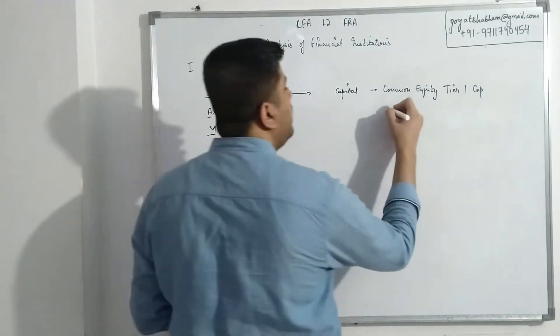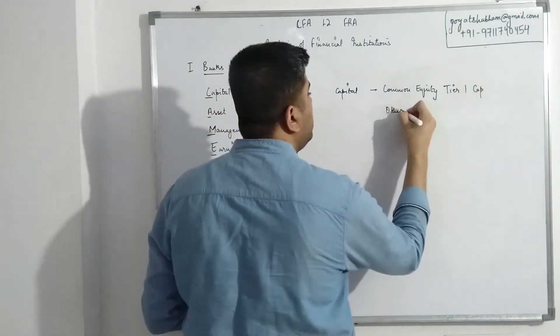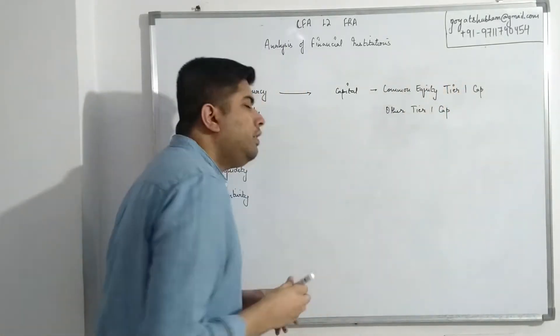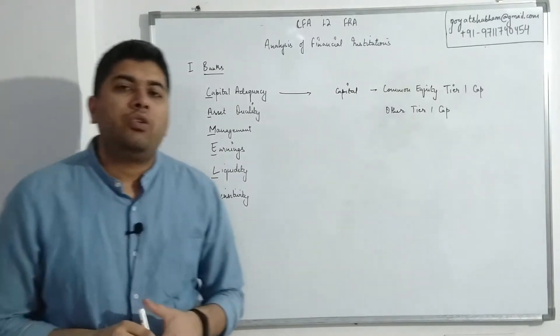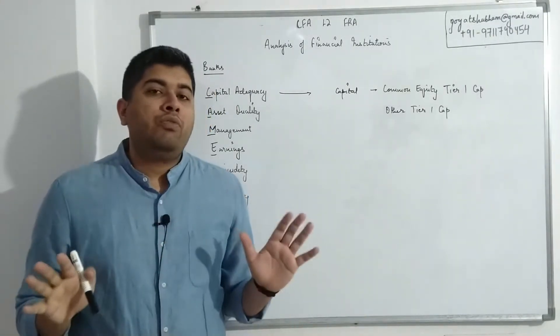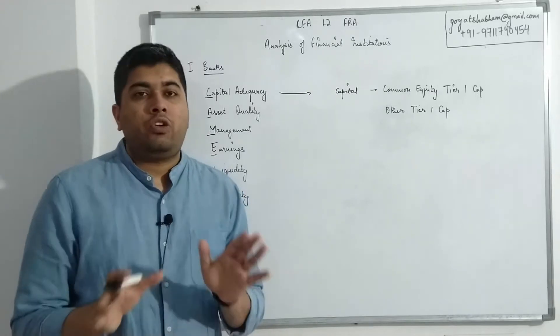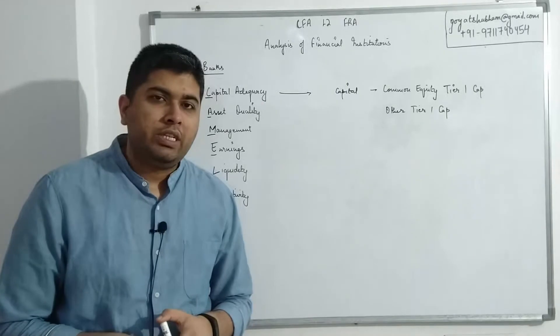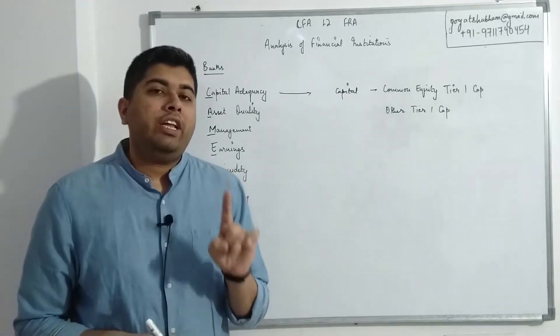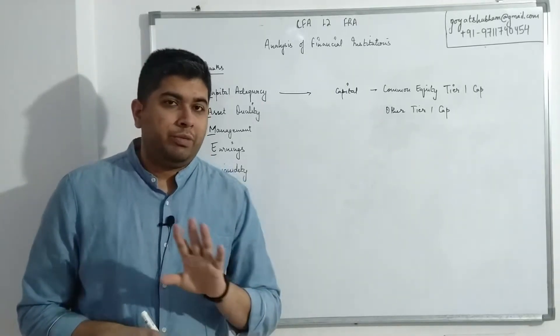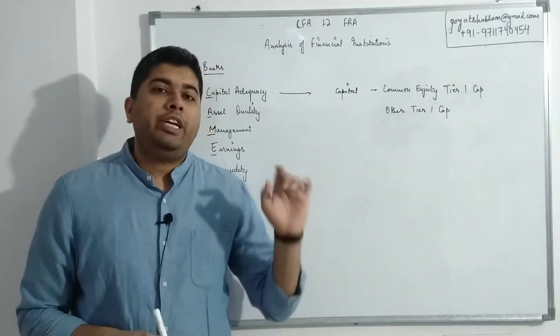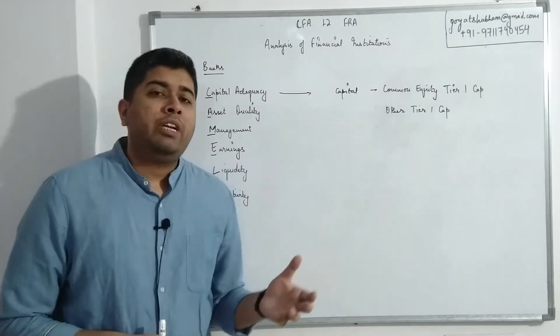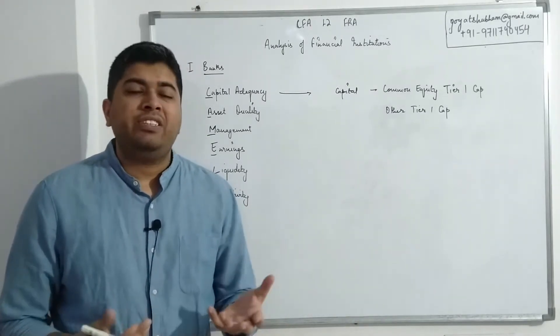Then you have Other Tier 1 Capital. Other Tier 1 Capital basically includes all other kind of instruments which have no fixed maturity, which means there is no sort of redemption date specified for these instruments. There is no fixed maturity for these instruments and also they don't have any contractual obligation.